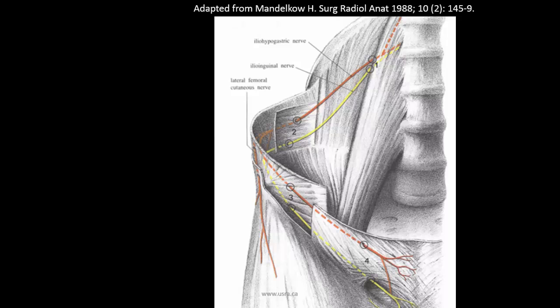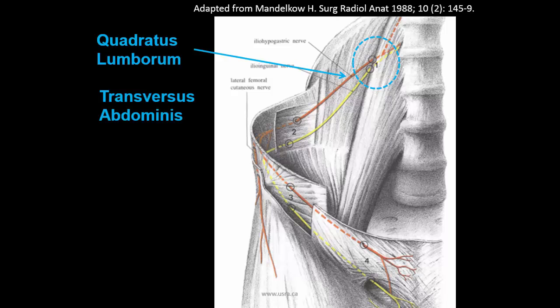The ilioinguinal and iliohypogastric nerves emerge from the lateral border of psoas major inferior to the twelfth rib and course over the anterior surface of quadratus lumborum. Lateral to quadratus lumborum, they initially run deep to transversus abdominis for a variable distance, before piercing transversus abdominis to enter the TAP plane between internal oblique and transversus abdominis. Anterior to the iliac crest, the nerves ascend gradually, piercing first internal oblique and then external oblique. However, the location at which this occurs varies widely between individuals.